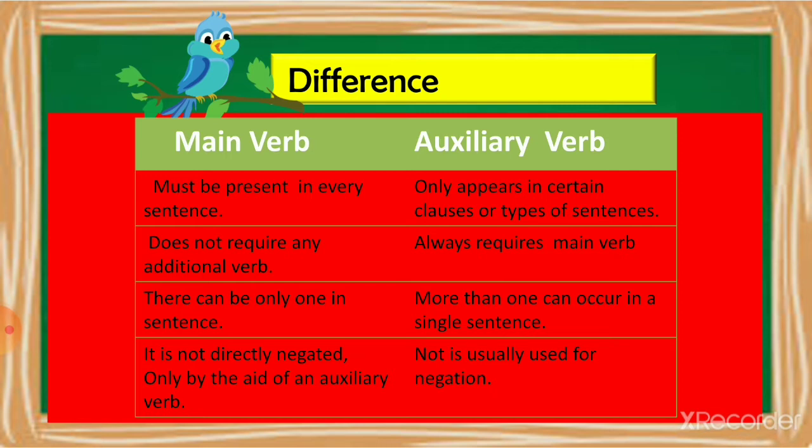A main verb is not directly negated — we do not put 'not' directly to the main verb; we use it with the auxiliary verbs. 'Not' is usually used for negations. These are the main differences between main verb and auxiliary verb, and I hope you have understood the difference between main verbs and auxiliary verbs.